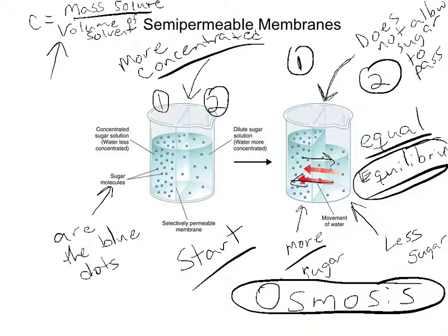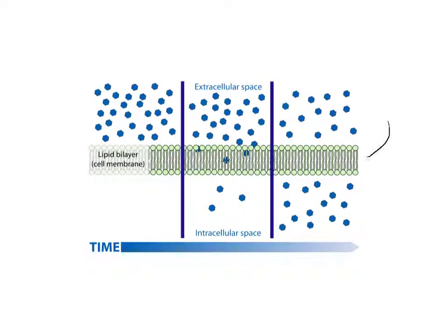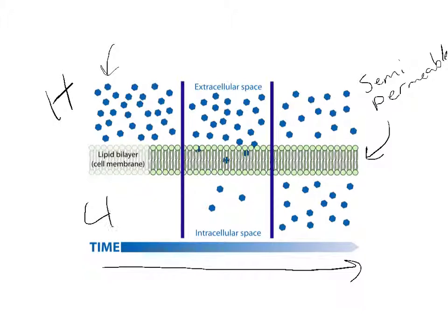Osmosis is the process of water moving because of the concentration of solutes. The cell membrane is one of those semi-permeable membranes, and because it's semi-permeable it allows some things through and not others. In this example, the blue dots are able to pass through the membrane without any trouble — so this is diffusion. You have a high side and a low side, and you get a net movement of particles from high to low.